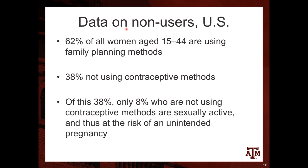Looking at data for non-users of contraception in the US, 62% of all women aged 15 to 44 are using some sort of family planning method, and 38% are not using contraceptive methods. But of that 38%, only 8% who are not using contraceptive methods are sexually active and thus at risk of unintended pregnancy. So when we look at these numbers, we have to consider what percentage of those not using contraceptive methods are sexually active and do not want to get pregnant.